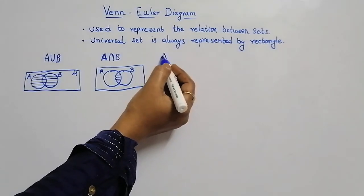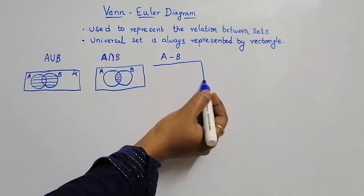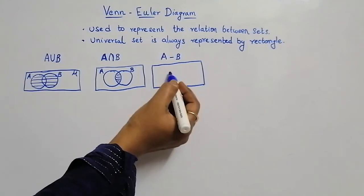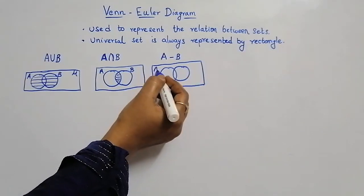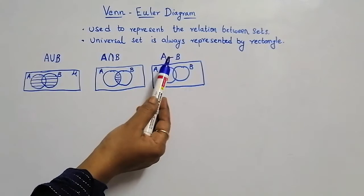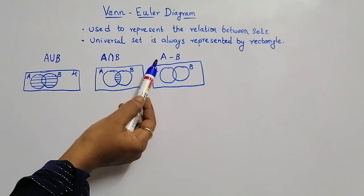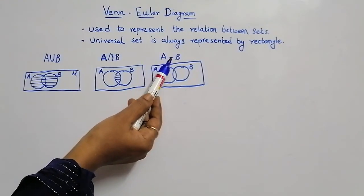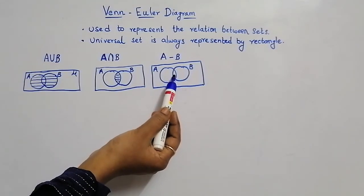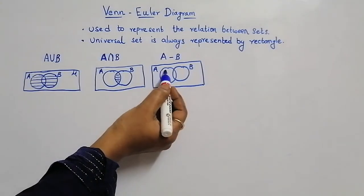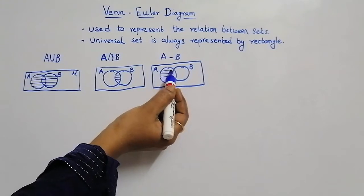Now let us consider A minus B. We draw a rectangle as our universal set, and within this we have two sets A and B. A minus B means all the elements in A, avoiding the elements in B. So avoid the overlapping B part and shade only the remaining elements of A. This gives A minus B.